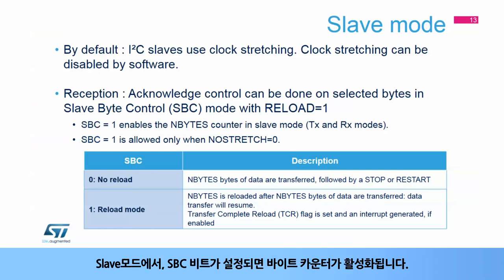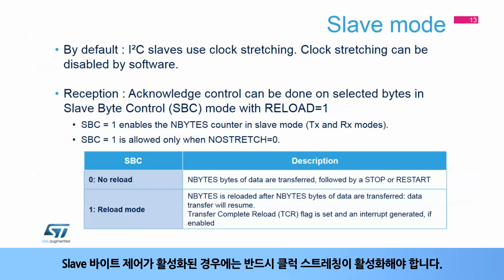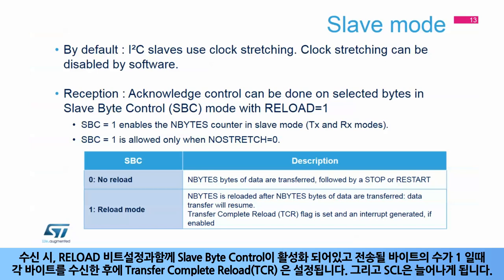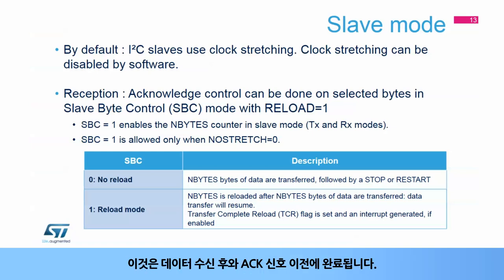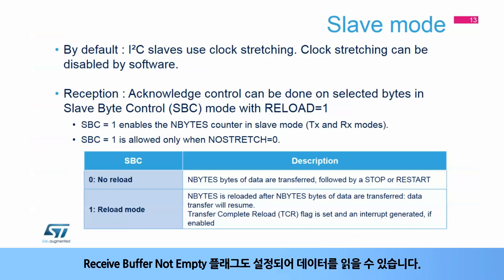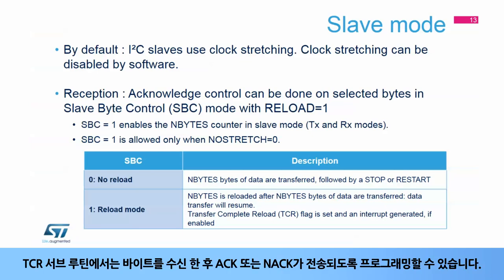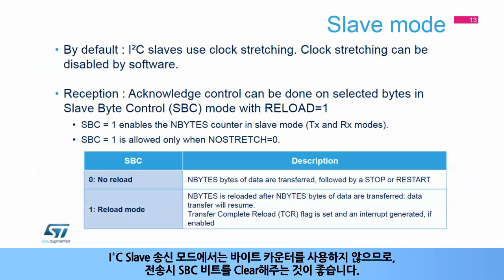When the SBC bit is set, the number of bytes counter is enabled in slave mode. Clock stretching must be enabled when slave byte control is enabled. In reception, when slave byte control is enabled with the reload bit set and the number of bytes to be transferred is 1, the transfer complete reload flag is set after each received byte and SCL is stretched. This is done after data reception and before the acknowledge pulse. The receive buffer not empty flag is also set so the data can be read. In the TCR subroutine, an acknowledge or not acknowledge can be programmed to be sent after the byte is received. It is recommended to clear the SBC byte in transmission as there is no use for the byte counter in I2C slave transmitter mode.